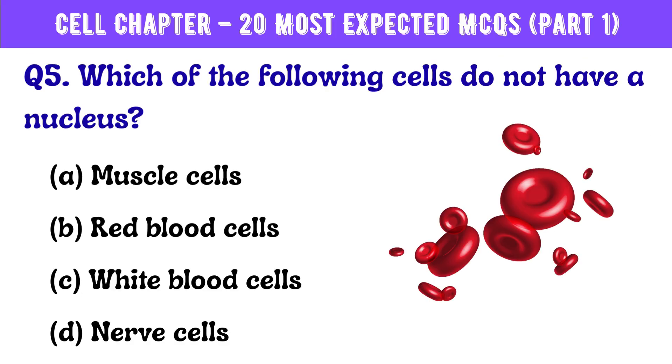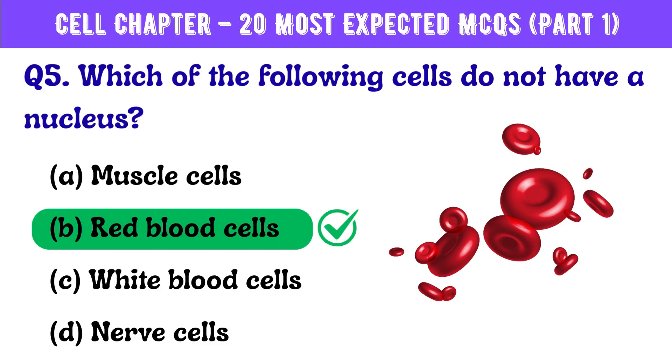Question number 5. Which of the following cells do not have a nucleus? Correct answer is option B: Red blood cells.